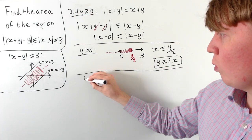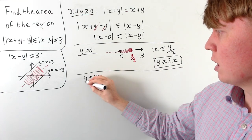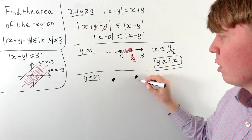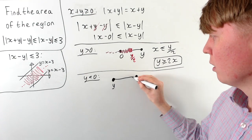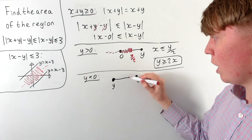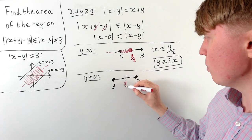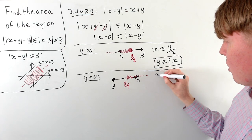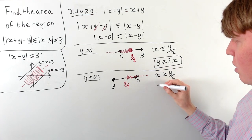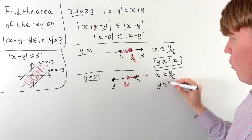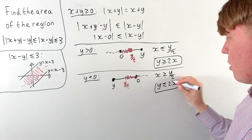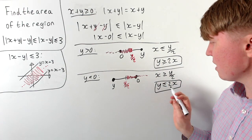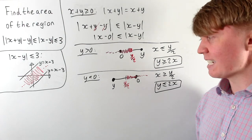When y is negative, we get the reverse picture: y is to the left on our number line and 0 is to the right of y. In order for x to be closer to 0 than to y, we now need x to be greater than or equal to y over 2, which rearranges to y is less than or equal to 2x. So y has to be bigger than 2x when y is positive, and less than or equal to 2x when y is negative.